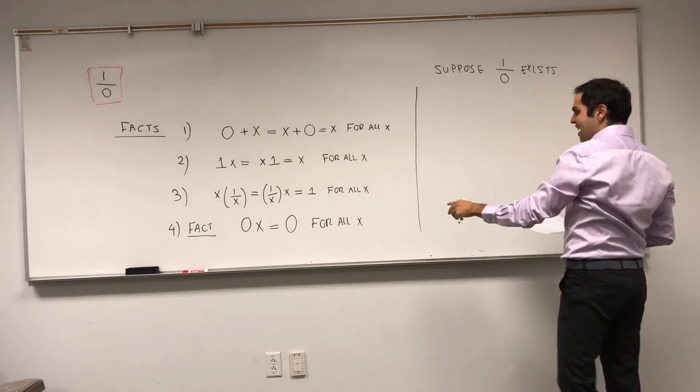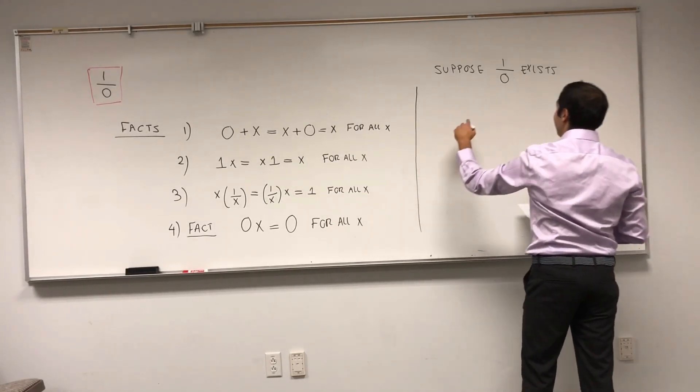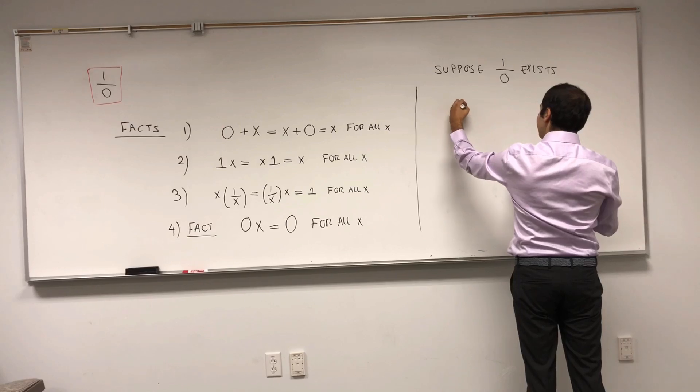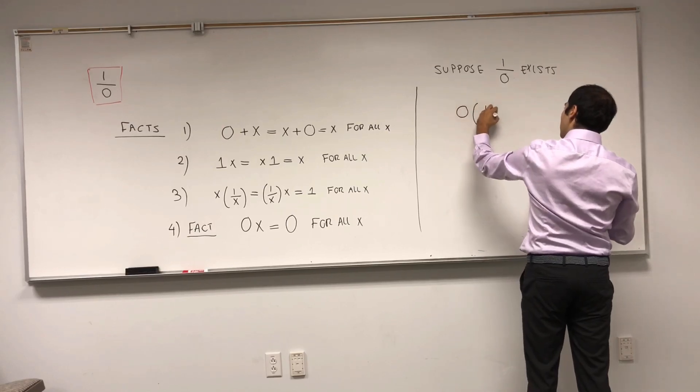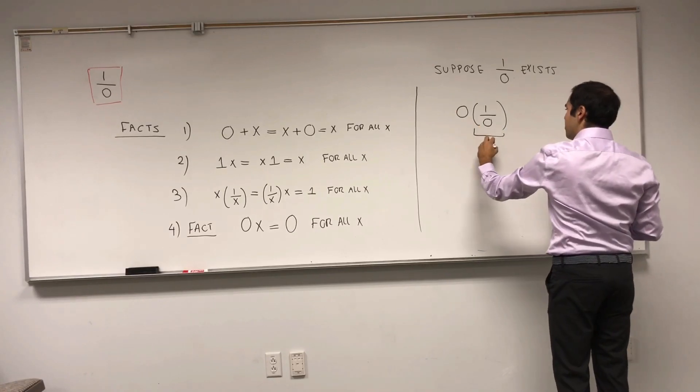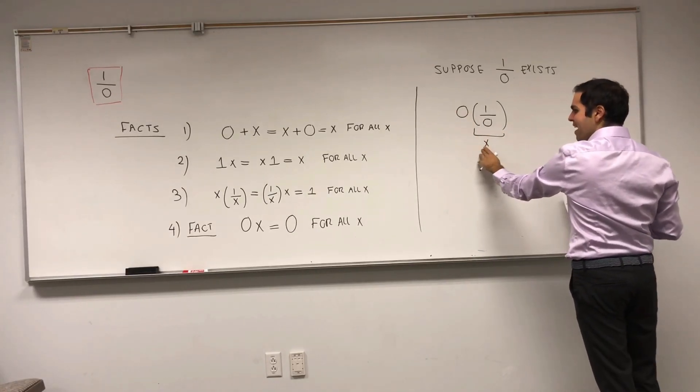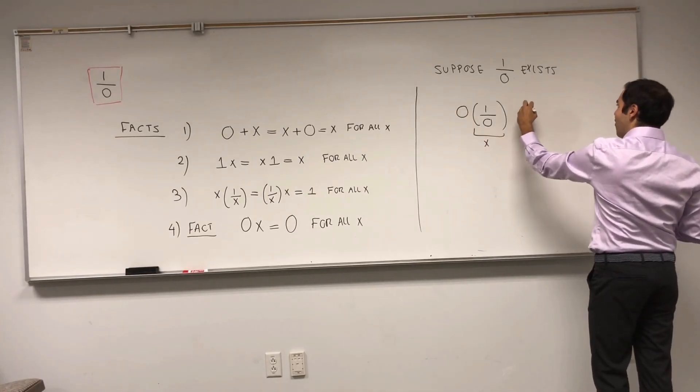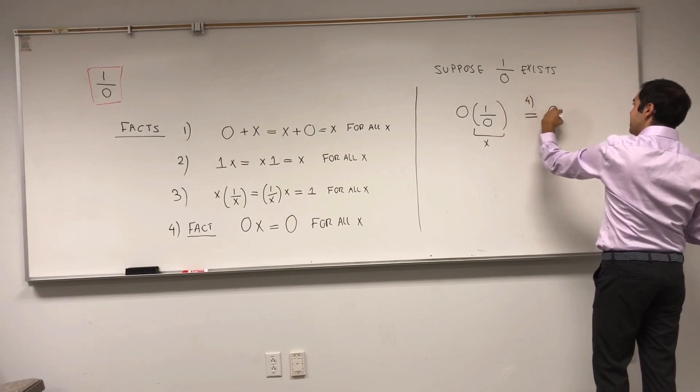Well, then, by this fact, right, we would have 0 times 1 over 0. Because you multiply 0 by x by fact 4, this would be equal to 0.